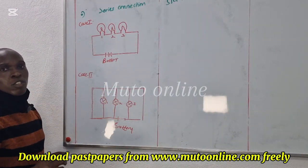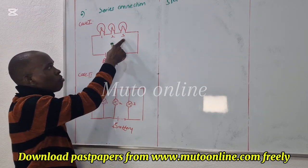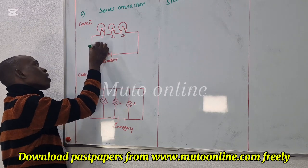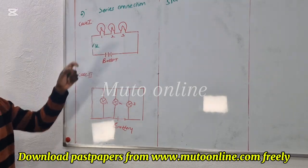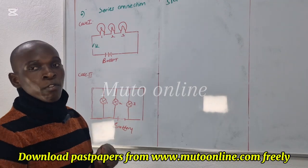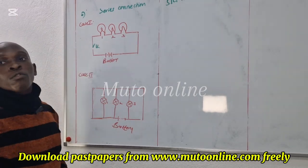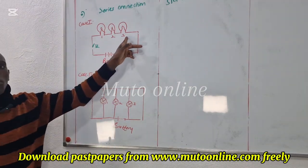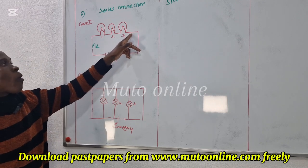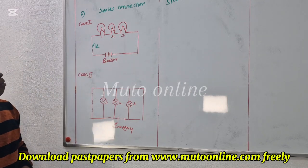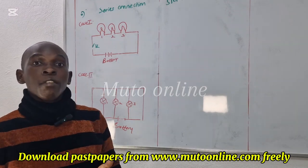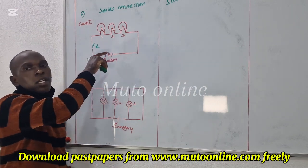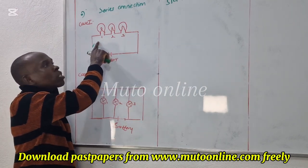I have three bulbs in this case — bulb one, bulb two, bulb three. If I have a switch here, when I complete it, current will flow through the circuit and these bulbs will give light. When they light up, realize that they will all be in the same wire. It has some advantages and disadvantages. The advantage is that it consumes the same power — current is the same.